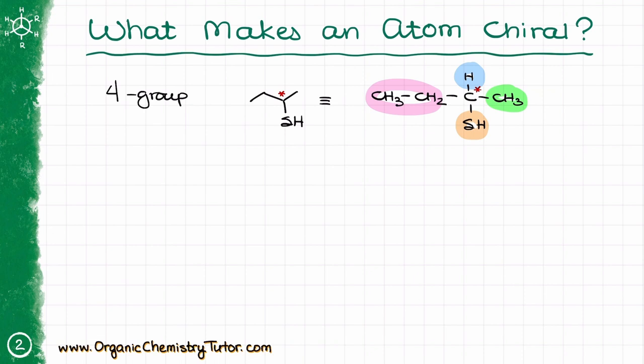Here is something very important: you have to analyze the entire group and not just the first atom attached to your atom of interest. In this example, I have the pink group and the green group — they are both carbon-containing groups. The ethyl group starts with carbon, the methyl group starts with carbon as well. However, they are different groups. If you are only looking at the very first atom, that would be carbon versus carbon, so seemingly no difference. Make sure you are analyzing the entire group.